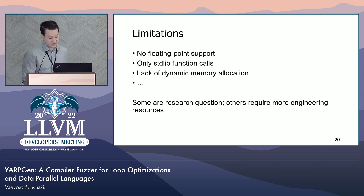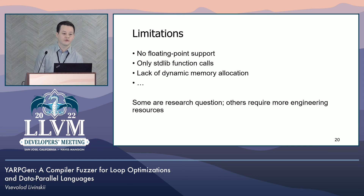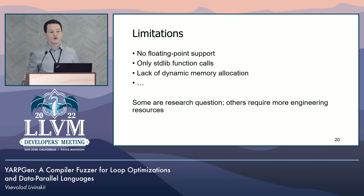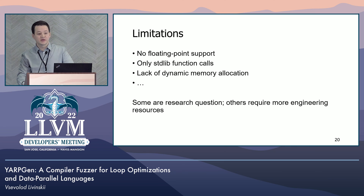Unfortunately, YARP Gen has some limitations. Some of them — for example, a lack of floating point support — are open research questions. Others, like a lack of dynamic memory allocations, are caused by limited engineering resources.